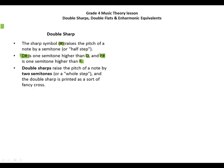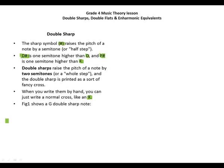A double sharp raises the pitch of a note by two semitones, or a whole step. The double sharp is printed as a fancy cross symbol. When you write them by hand, you can just write a normal cross like an X. Figure one shows a G double sharp note — this is how a double sharp looks next to a note.